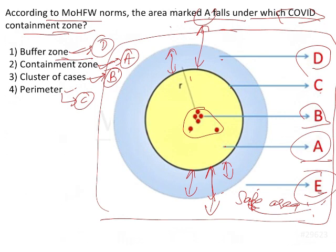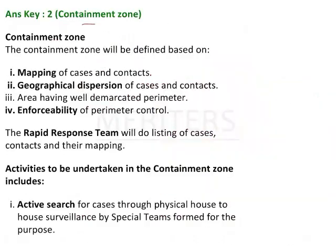Our answer is the containment zone. Going into a little more detail — because COVID was spreading rapidly, they could ask other related questions. The containment zone is defined based on mapping of cases, the distribution and dispersion of cases, enforceability, and well-demarcated perimeters.